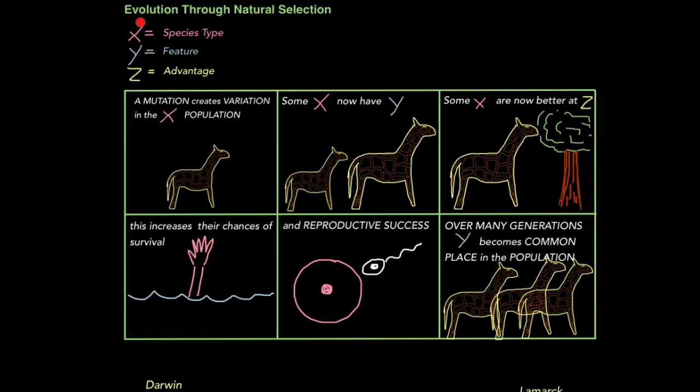Now let's look at evolution through natural selection in more detail. I've developed a writing frame for this that will help you answer any question on natural selection. In this writing frame, the pink X represents the species we're talking about, the blue Y represents the feature that gives the organism an advantage, and Z details the nature of the advantage. So the idea is if you can substitute X, Y, and Z into this writing frame for the species you're talking about, you'll get it right every time.